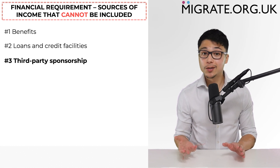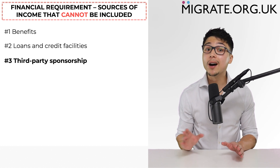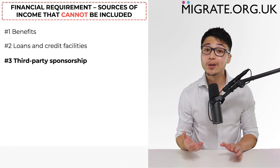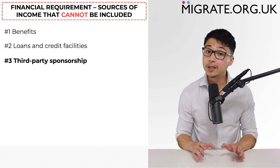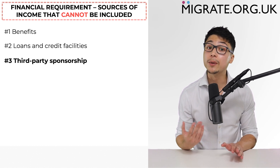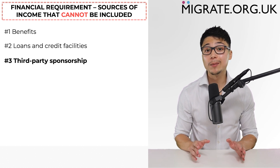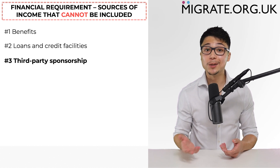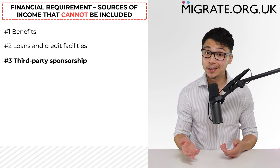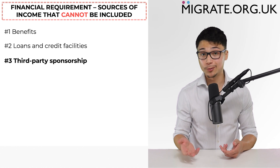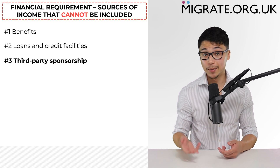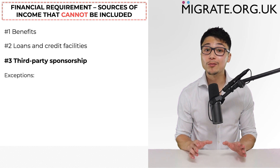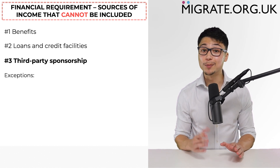Three: in nearly all applications, third parties — in other words people other than the applicant or sponsor — cannot sponsor the application just because the financial requirement is not met based on the permitted sources of income. For example, a wealthy friend or family member cannot simply write a letter stating they are happy to sponsor the fiancé visa application based on their own bank statement and income. As is normally the case in the immigration rules, there are exceptions to the rule that there cannot be third-party sponsorship.